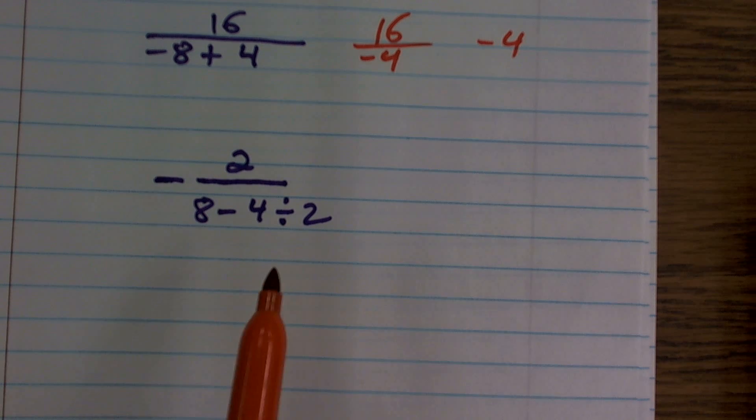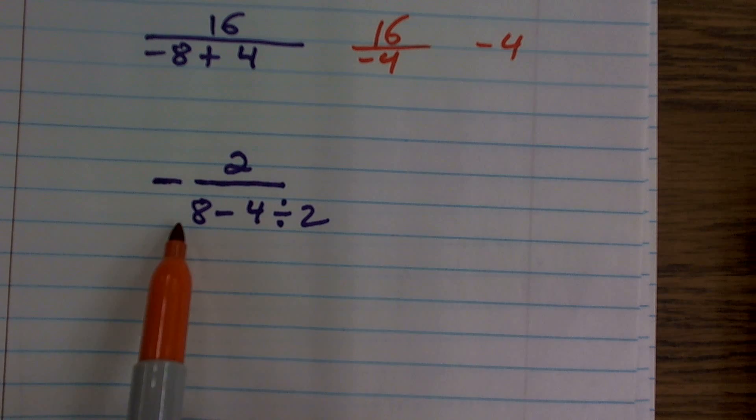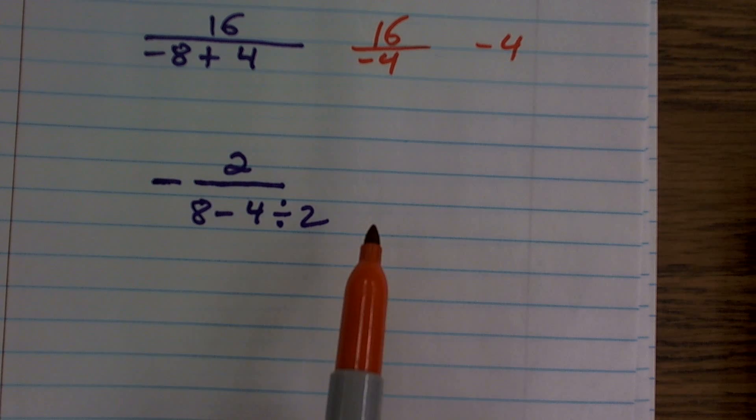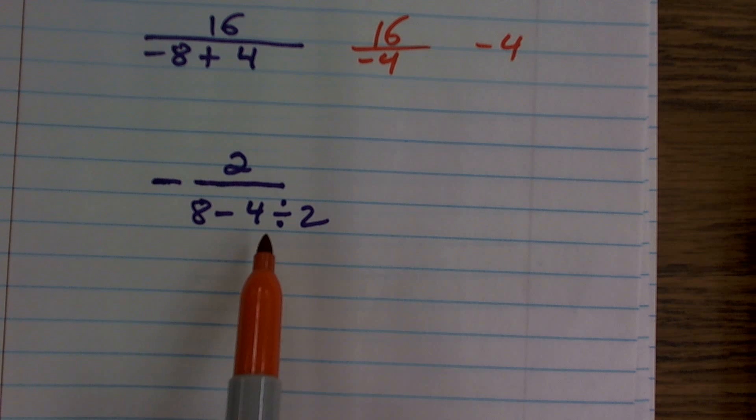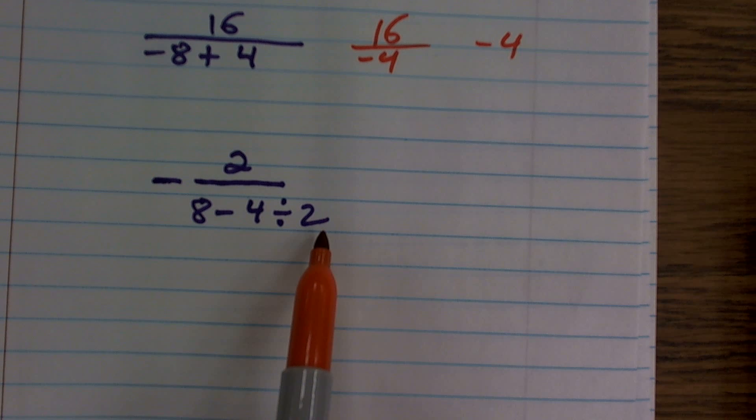Just make sure I did this just to make sure to kind of catch you to make sure that we follow the order of operations. So since I'm simplifying my denominator, I have to follow my order of operations again. 4 divided by 2 is 2.